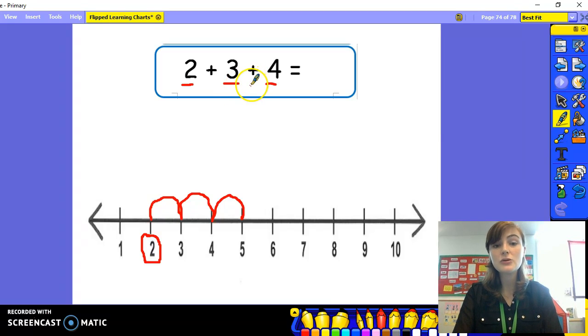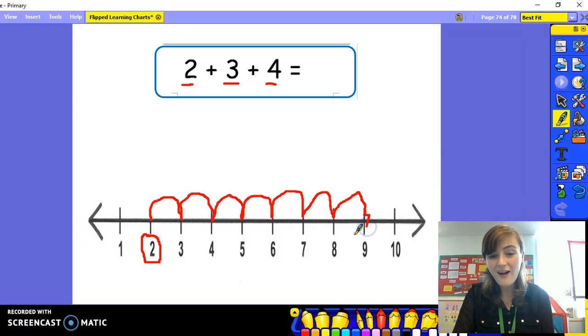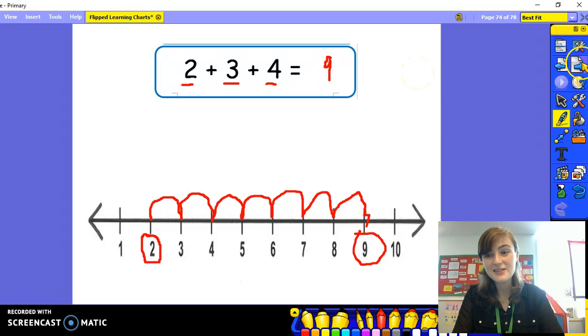We still need to add four more. Let's count on. One, two, three, four. I landed on nine. Did you? Fantastic. Two, plus three, plus four, equals nine.